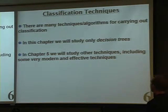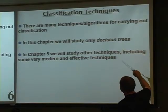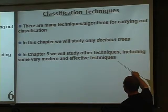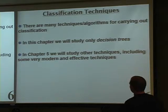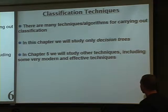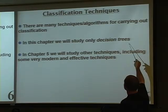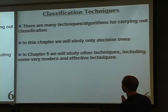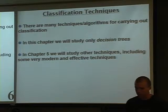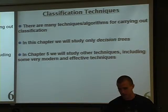There are many techniques and algorithms for carrying out classification. Chapter 4 focuses only on decision trees, while chapter 5 gets into more modern and effective techniques. Decision trees by themselves have fallen out of favor, but they are often used as components in other modern techniques like boosting and random forests.